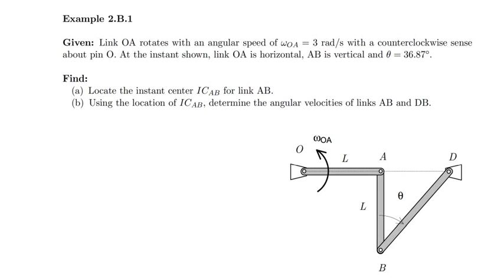Okay, so in this example we have a little four-bar mechanism, and we're told that link OA rotates, in this case counterclockwise, with a given angular speed. Based on this information, as well as the fact that link OA is horizontal, link AB is vertical, and theta is a prescribed angle at this instant.